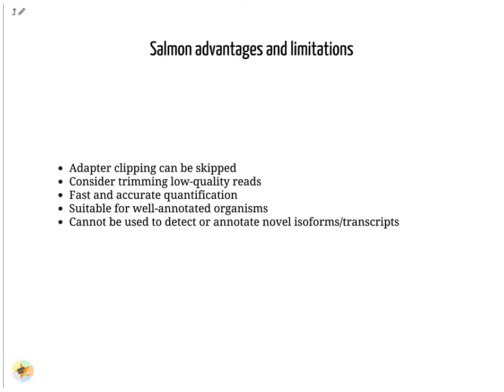Salmon has several advantages and few limitations over traditional alignment methods. Salmon provides fast and accurate quantification; since k-mers containing adapter sequences are not present in the transcriptome index from which the hash table is generated, adapters are not mapped. If there is no significant amount of adapters present in the reads, adapter clipping can safely be skipped. However, it is always good to trim low-quality reads. Because of the large memory footprints of hash tables and suffix arrays, generally a transcriptome FASTA file is used for Salmon quantification instead of a whole-genome FASTA file. Therefore, it is advisable to use this tool on well-annotated organisms.